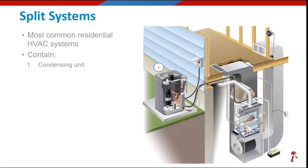Split systems start off with the condensing unit, usually sitting on a pad outside the building. It could be up on a shelf or a bracket, and in commercial settings it might actually be up on that low-slope roof. They can look different — different colors, sizes, shapes — but that's usually just brand specific. We're going to break that condensing unit down step by step here in just a minute.